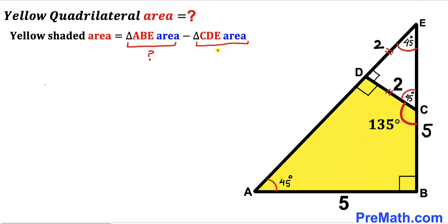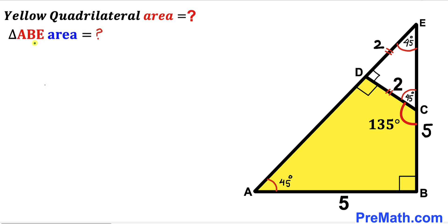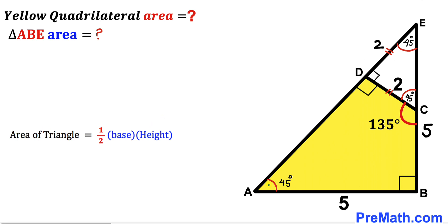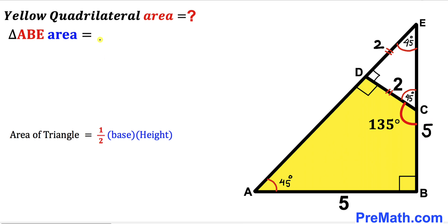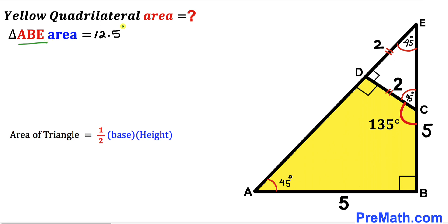Let's calculate the area of triangle ABE first, using the formula: Area = ½ × base × height. The base of triangle ABE is 5 units and the height is also 5 units. So the area of triangle ABE = ½ × 5 × 5 = 25/2 = 12.5 square units.